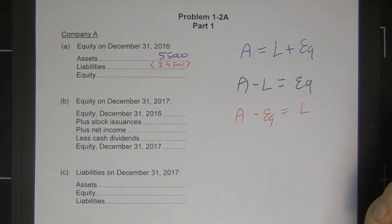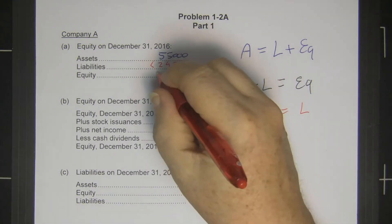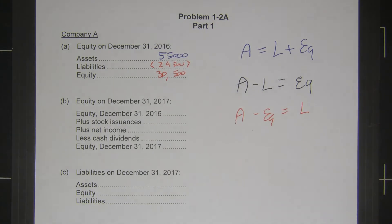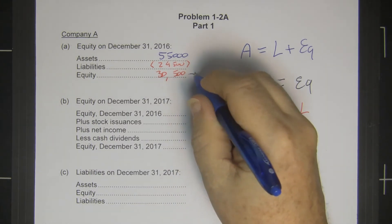That gives us assets minus liabilities equals equity of $30,500. The next part asks us to find the equity at the end of the next year. So the beginning equity for this year is the ending equity from last year, $30,500.